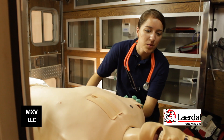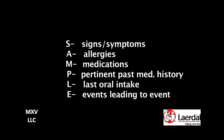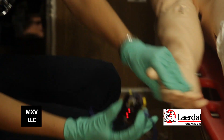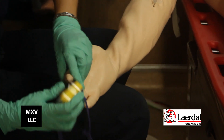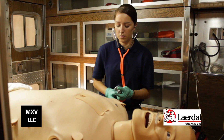She begins questioning the patient about the history of present illness and also starts obtaining the patient's SAMPLE history. Recognizing the patient's difficulty breathing, she places a pulse ox and places her on oxygen at 4 liters per minute.